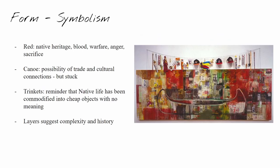Each aspect of this piece was chosen by Smith, and there's symbolism within everything. The red has multiple personal meanings to her, representing her own native heritage, and the blood, war, anger, and sacrifice that her culture has experienced. The canoe is meant to symbolize the possibility of cultural connection and trade between Native Americans and white people. However, it's stuck, and it can't move. The objects hanging on clotheslines above the work display how native life has been commercialized and turned into cheap objects that don't actually have any meaning behind them, like legitimate Native American objects would, while the various layers reference the complexity of her people and the history that should stand behind all these stereotypical objects but doesn't.